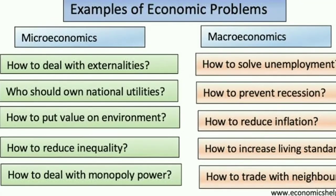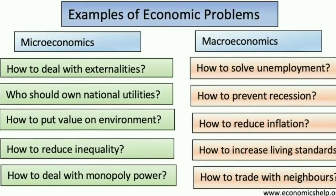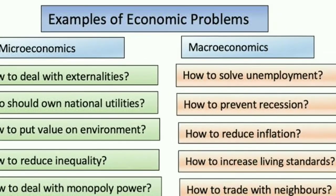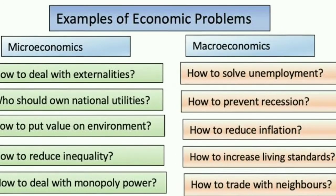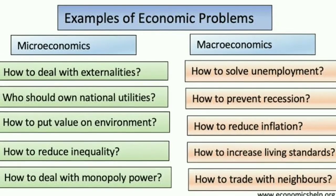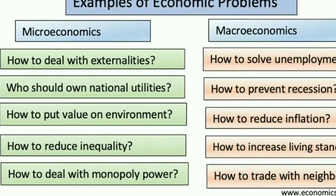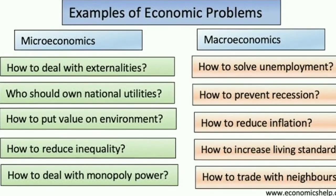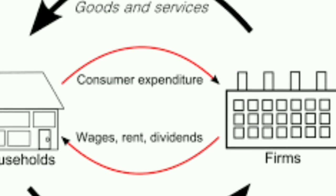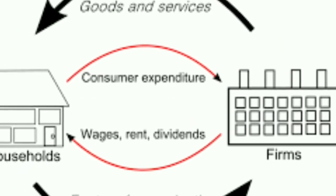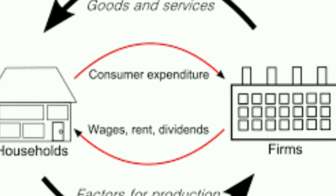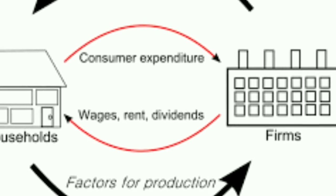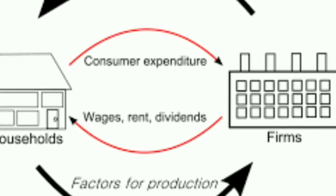Examples of economic problems differ between microeconomics and macroeconomics. Microeconomics deals with externalities and placing value on the environment, as well as monopoly power. Macroeconomics solves problems of unemployment, recession, and inflation, and enhances living standards through international trade. The circular flow of income is a macroeconomic concept, where factor inputs are delivered and factor payments received, connecting households and firms.